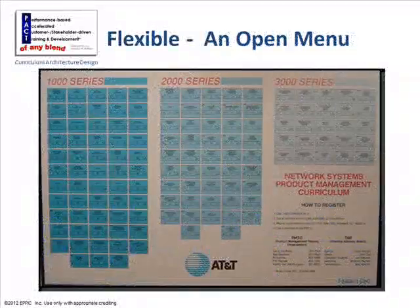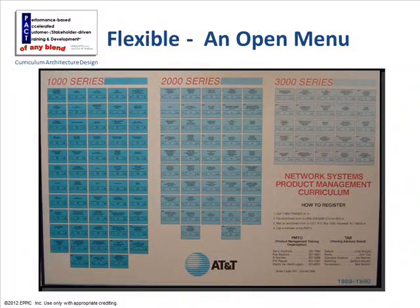This AT&T example is a bit more flexible — the architecture was first done in 1986 and updated in 1989 and 1992. The 1000–2000 series are basic, intermediate, and advanced. With 1,100 people in the target audience and eight major functions of the product manager's job, variability across people with the same job title was tremendous. So this was a very open menu, allowing people to cherry-pick what was important to their specific job performance requirements.